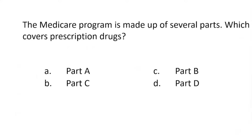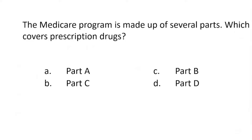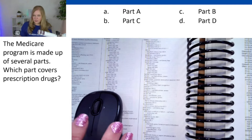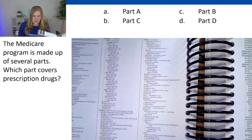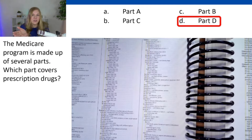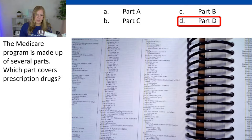Here's a simpler example of one of those concept questions. The Medicare program is made up of several parts — Part A, B, C, and D. Which part covers prescription drugs? They will want you to know the different parts of Medicare: which one covers hospital, which one covers physicians, which one covers the replacement plans, and which covers prescription drugs. Part A is your hospital, Part B is your physician, Part C is those Medicare replacement plans, and Part D is your pharmacy coverage — which is of course the answer here.